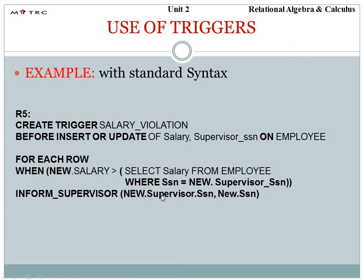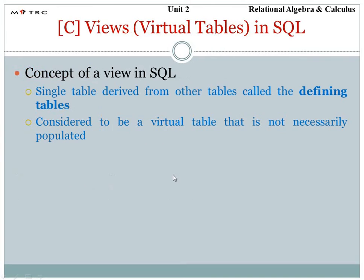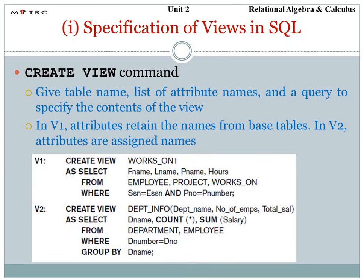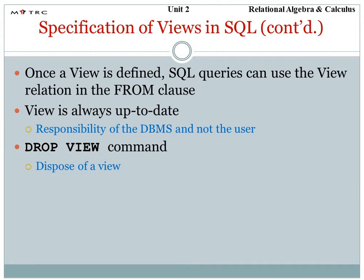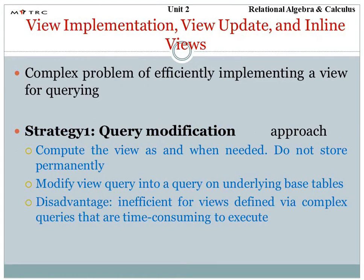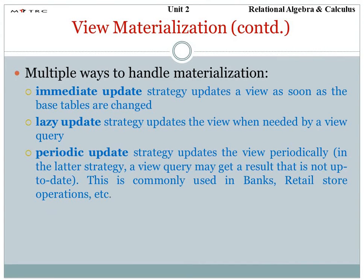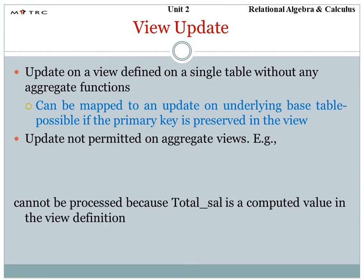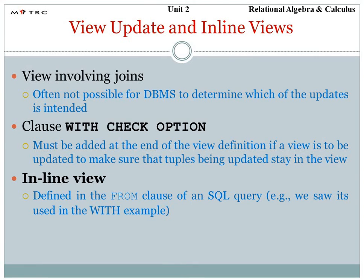We have created the salary trigger and analyzed it. Regarding virtual tables — we don't commonly use these tables in this context. You just need to know that we define a single table from a single table as a virtual table. For this we have the create view command, drop view, and strategy to modify the query. You just need to know that. How do you use SQL in SQL for views?